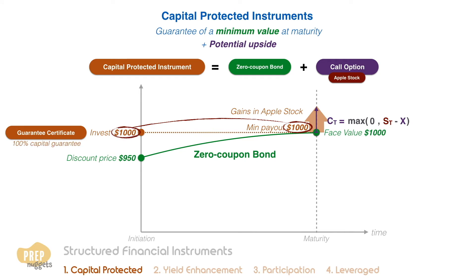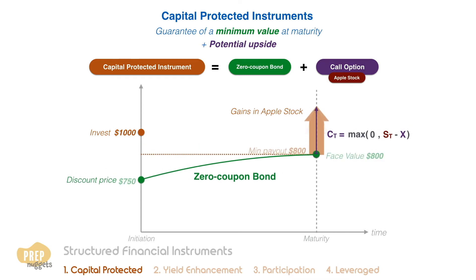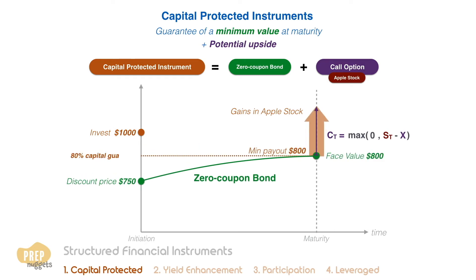This does not always have to be the case, though. For instance, an issuer can reduce the capital protection level to 80% by putting less money in the zero-coupon bond. This allows the issuer to purchase more call options, thus multiplying the potential upside to the investor.